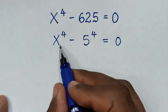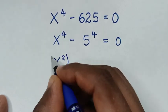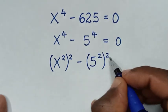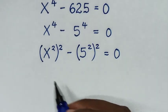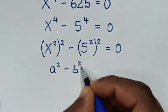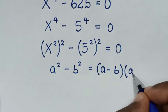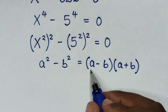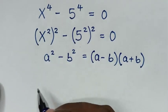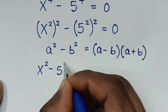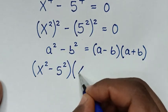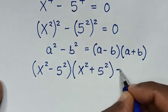On the left side we rewrite this in the form of a perfect square: x power 4 is the same as (x²)² and 5 power 4 is the same as (5²)², giving us (x²)² minus (5²)² equals 0. We now apply the difference of squares rule, a² minus b² equals (a minus b)(a plus b), to get (x² minus 25)(x² plus 25) equals 0.